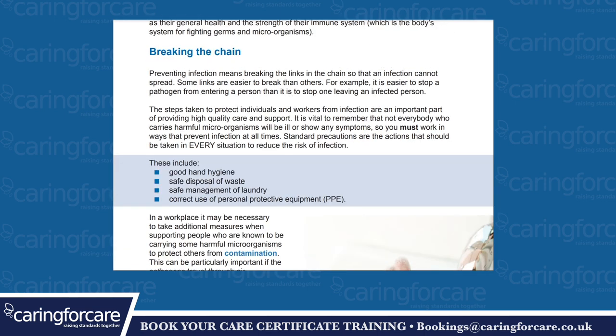The sixth and final link in the chain is the person at risk — the individual the pathogen moves to. The risk of a person becoming infected depends on factors such as their general health and the strength of their immune system, which is the body's system for fighting germs and microorganisms. Preventing infection means breaking the links in the chain so that infection cannot spread. It is vital to remember that not everybody who carries harmful microorganisms will be ill or show any symptoms, so you must work in a way to prevent infection at all times.